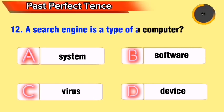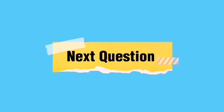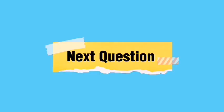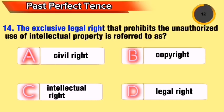Question 7: A search engine is a type of what computer application? Question 8: The rectangular-shaped viewing area of an application on the screen of a computer that the user works in is referred to as what? The exclusive legal right that prohibits the unauthorized use of intellectual property is referred to as what?